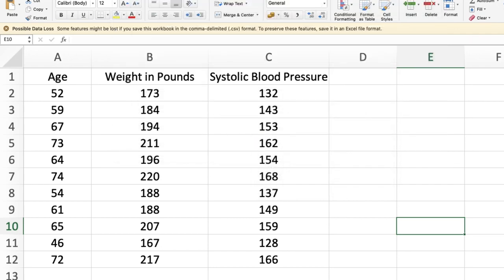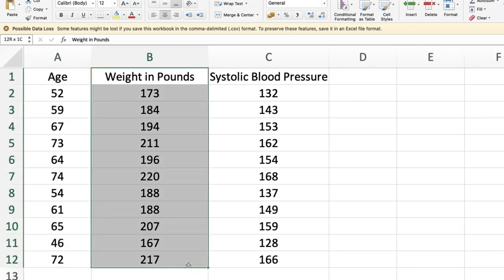So the file name for my data set is systolic.csv. What is the research scenario all about? A researcher believed that age and weight in pounds would probably influence the systolic blood pressure of the patients.